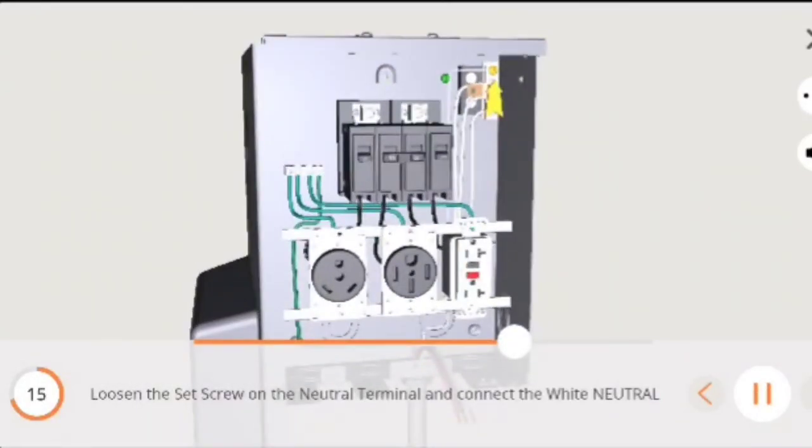Loosen the set screw on the neutral terminal and connect the white neutral wire to the terminal, securing it in place with the set screw.